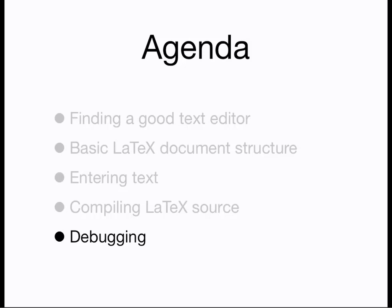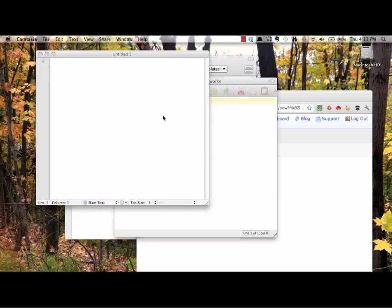Before we go on, you first need to have access to a LaTeX system. The first video in this series gave some places to go to access LaTeX. Once you have access, you can continue. Before we make a document, we need something with which to make it. LaTeX documents are written as plain text and are then compiled into PDFs. You need a text editor for typing out LaTeX source code.